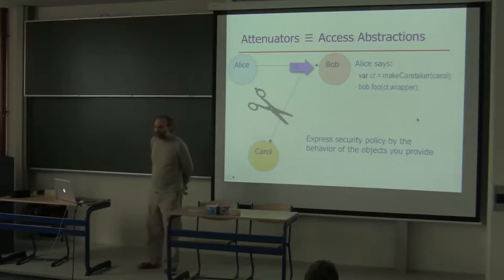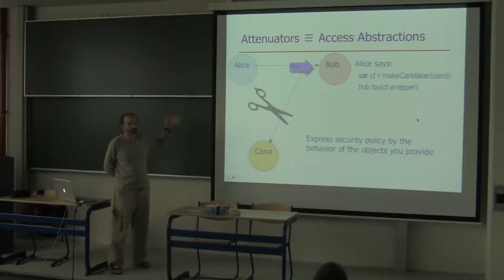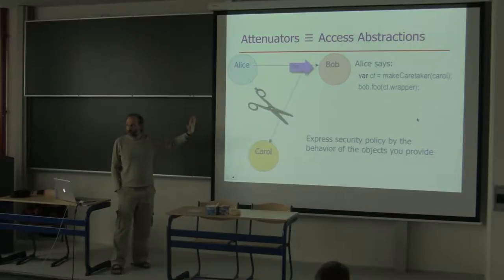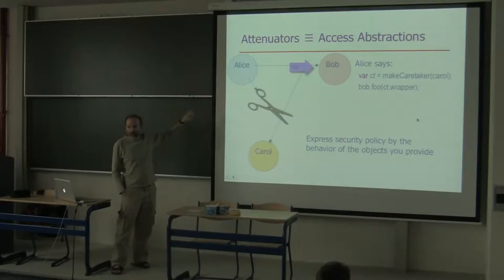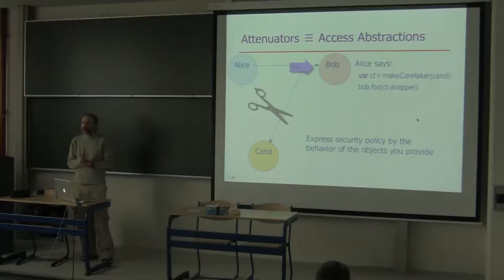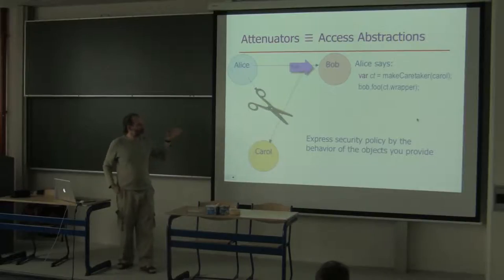The reason I call this an access abstraction is that, ignoring how it's implemented, from the users' point of view we've added a new kind of reference to our menagerie of references. The caretaker acts effectively like a smart reference whose additional property is severability — the reference stays connected until Alice cuts it, and Alice holds the ability to cut it. This gives the basic lesson of object capability style: you express security policy by the behavior of the objects you provide.